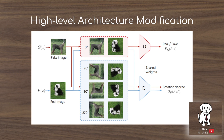They integrate the rotation task within the GAN framework. GANs already work where the generator produces a fake image and a real image is sampled from the dataset, and the discriminator tells real from fake. Now the images go into this pipeline and they're rotated, so the discriminator is classifying them as real or fake but also predicting the rotation of the image.